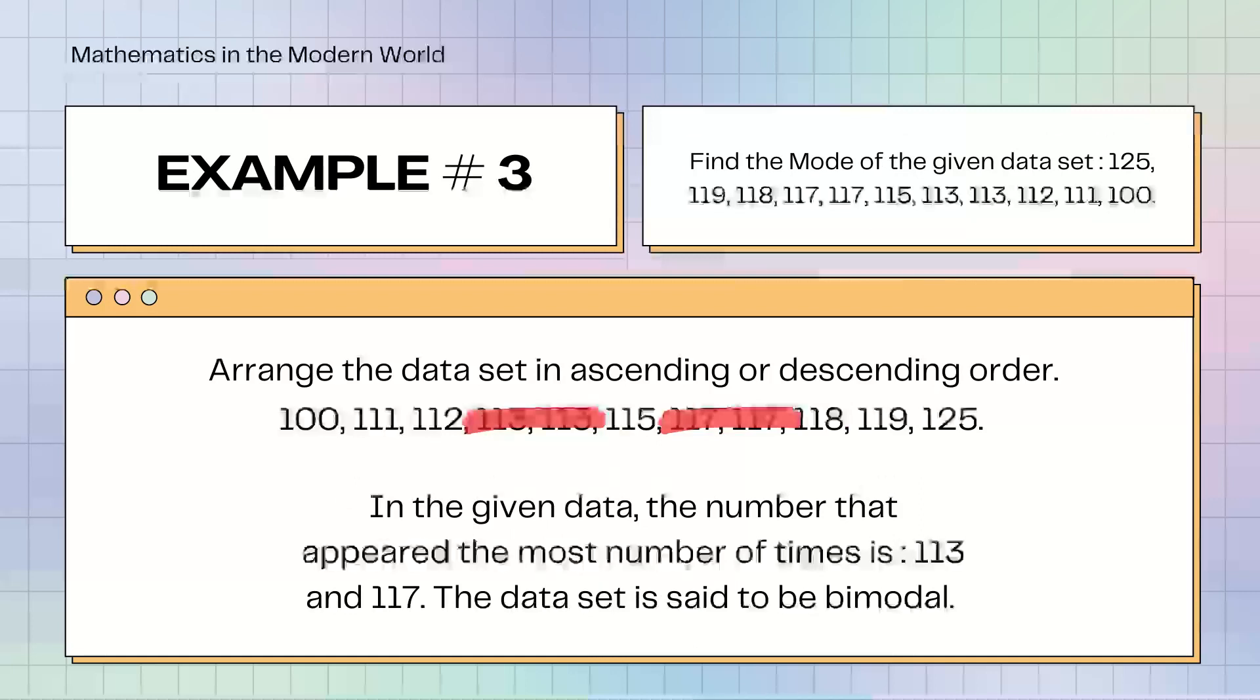Example number 3. Find the mode of the given dataset: 125, 119, 118, 117, 117, 115, 113, 113, 112, 111, 100. After we arrange the dataset in ascending or descending order, as we can see, there are two modes in the dataset: 113 and 117. The dataset is bimodal.